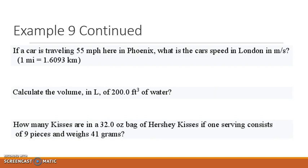Alright, on this slide we've got some problems that are a little bit more challenging. So we're still doing dimensional analysis or conversions, but we're going to start looking at some problems that are a little bit more in depth. The first one: if a car is traveling 55 miles per hour here in Phoenix, what is the car's speed in London in meters per second?